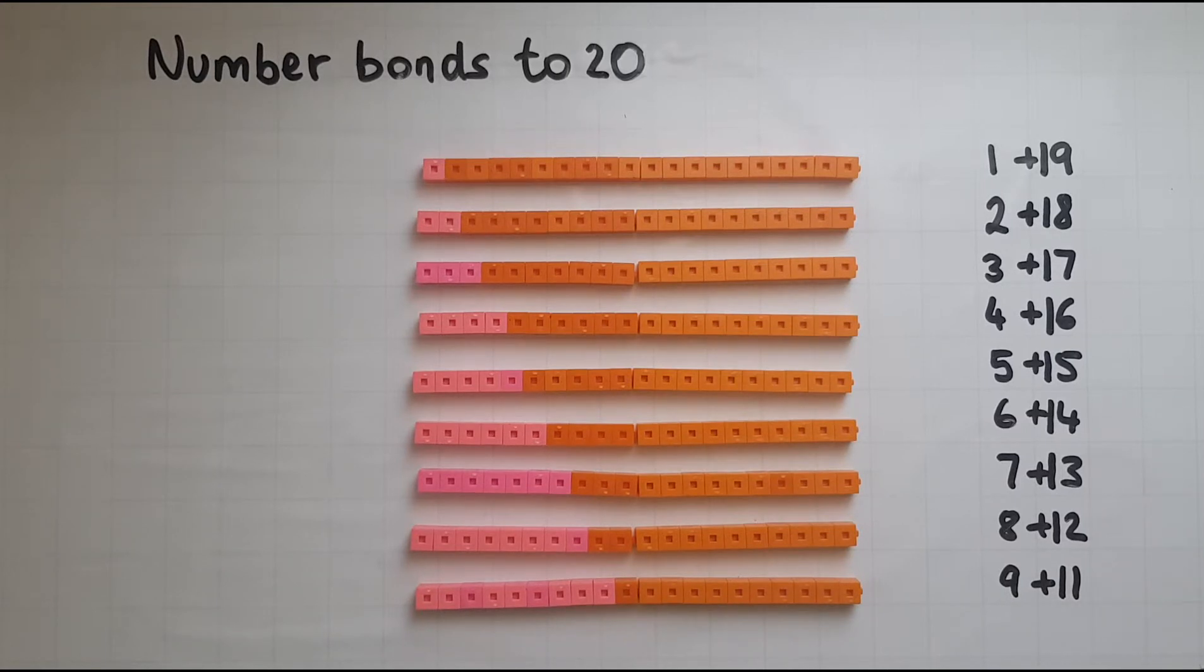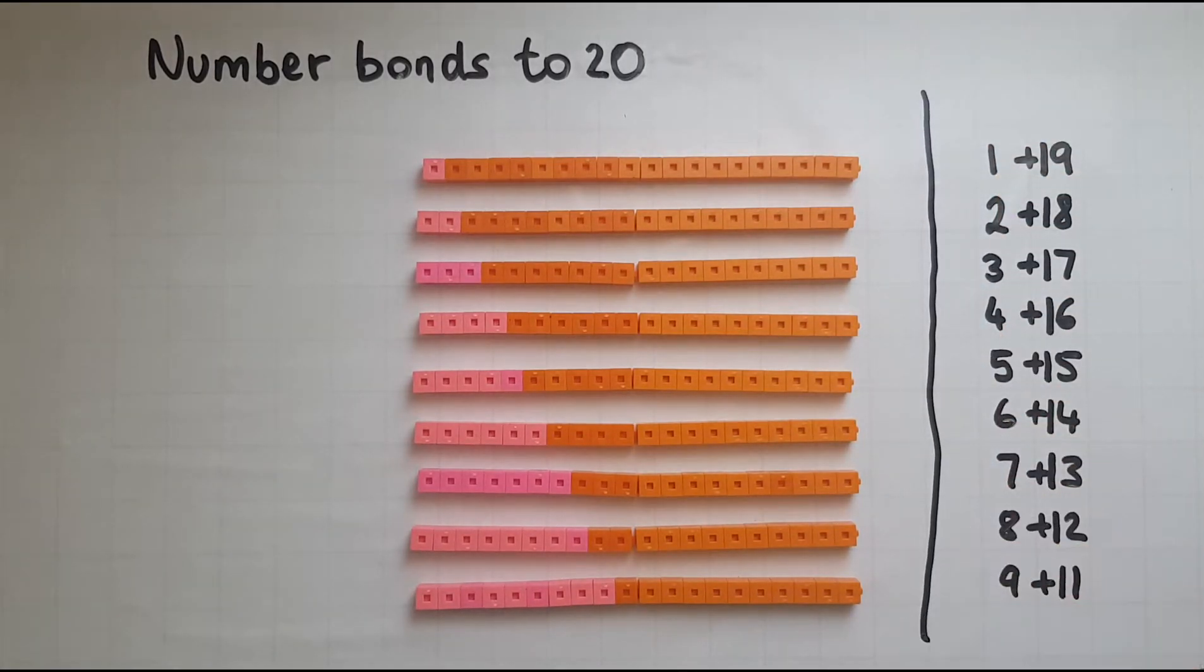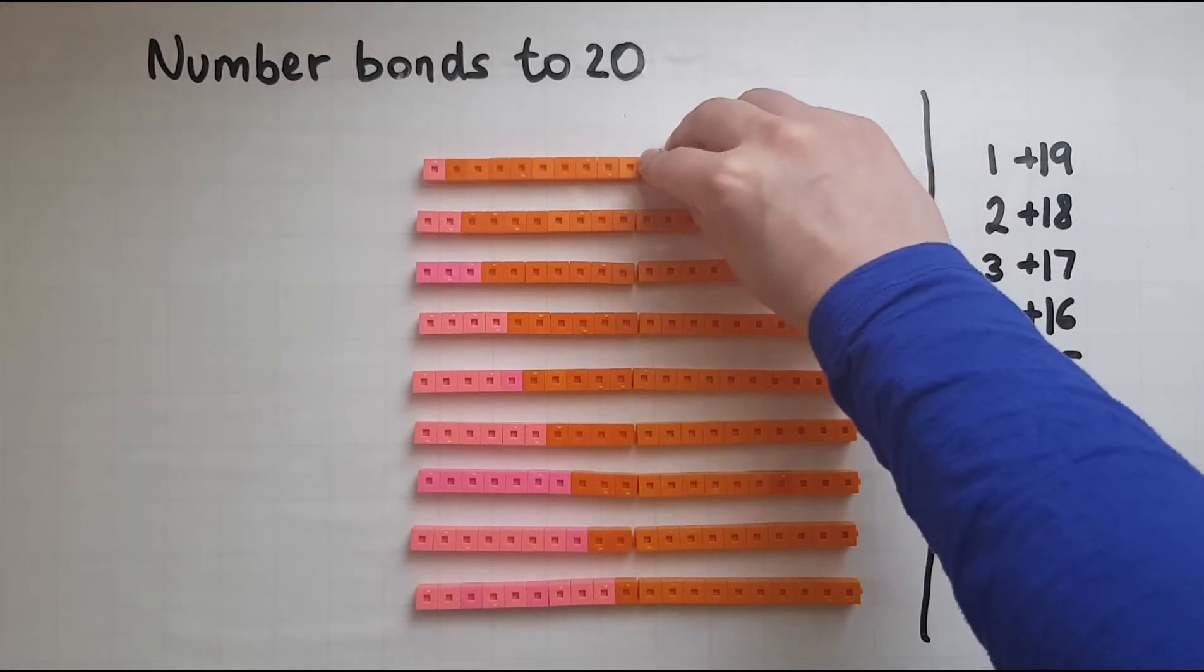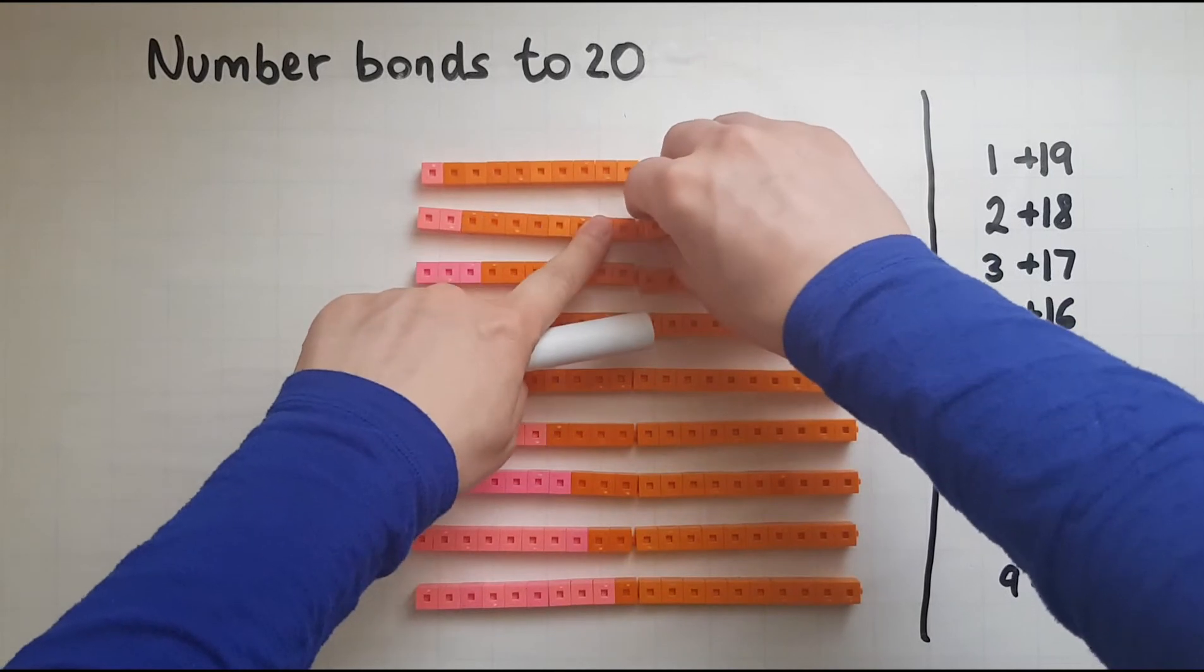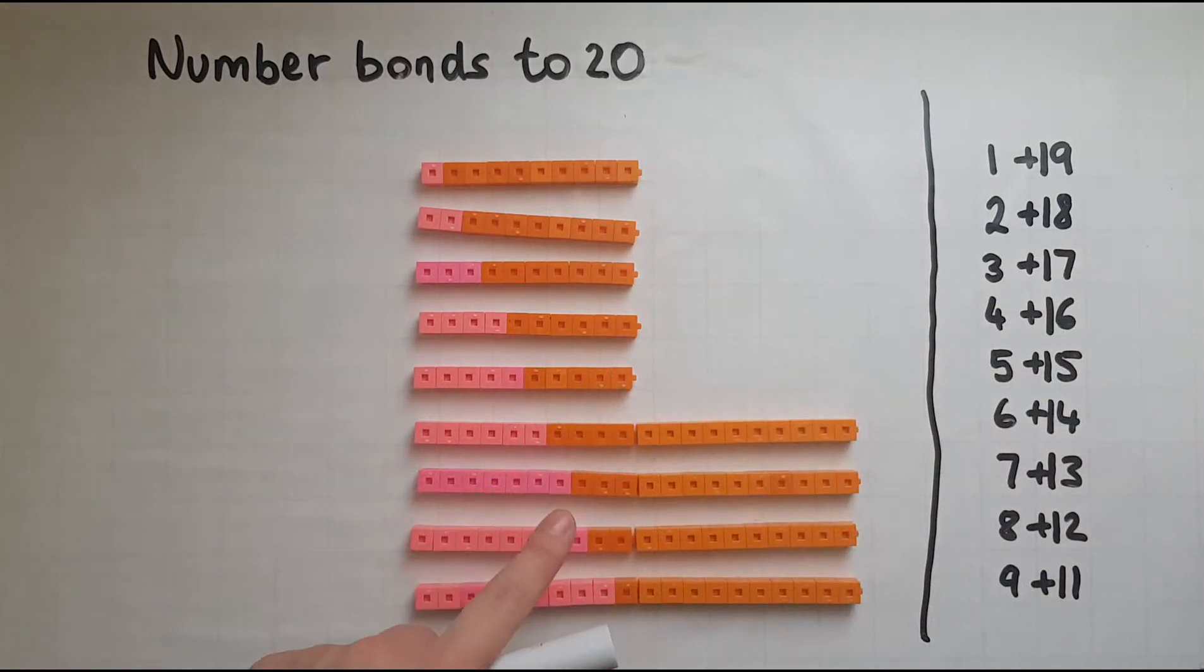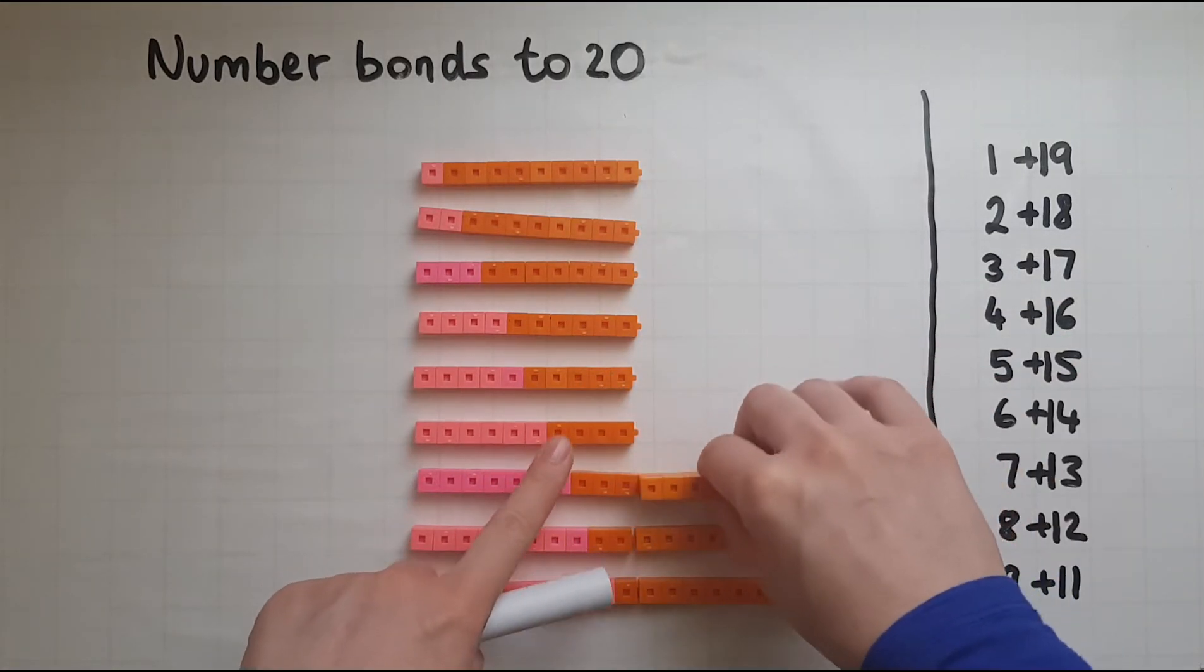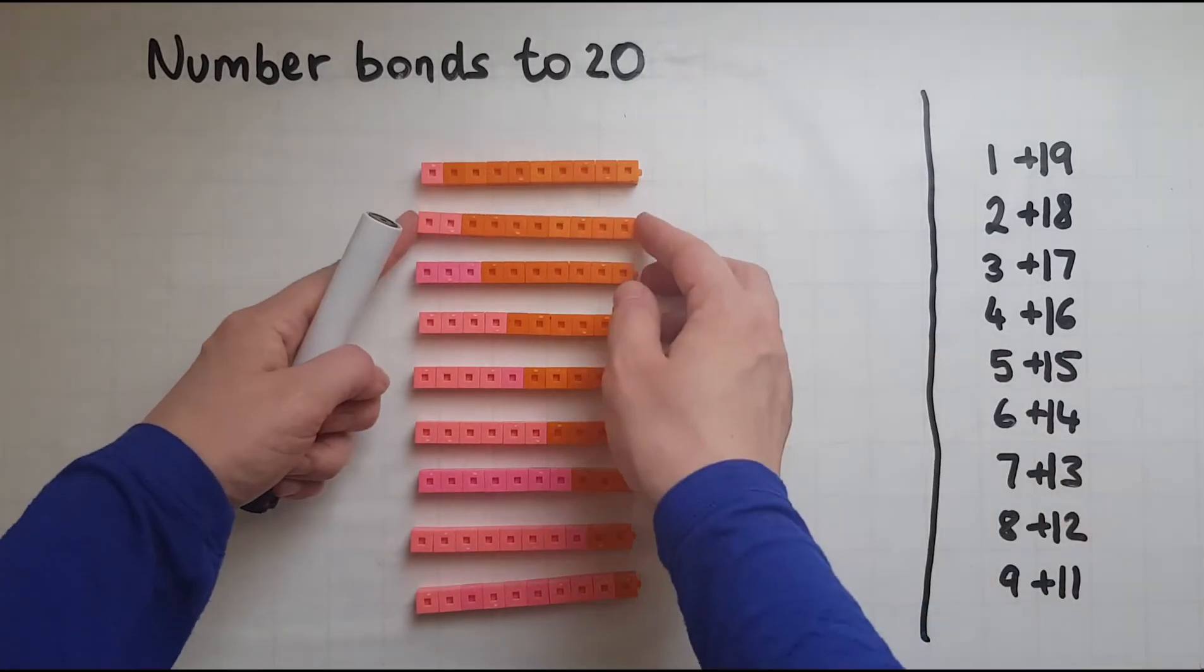So these are some of the number bonds, but we have a few more. The other ones would be if I added that 10 to the first number, and you'll see how that looks like when I do it.